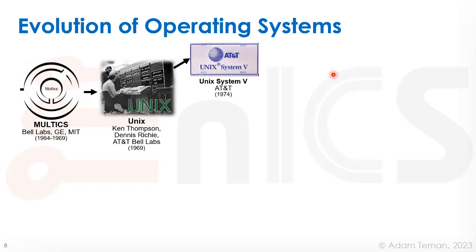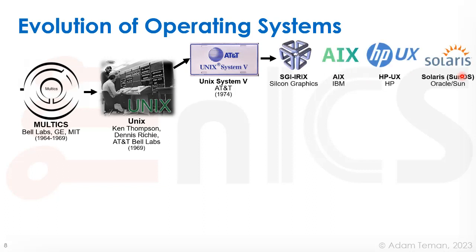UNIX continued its development and eventually became UNIX System 5 by AT&T, which came out in 1974. That led to a bunch of different companies using UNIX to provide their operating systems: Silicon Graphics had SGI IRIX, IBM had the AIX distribution, HP had HP-UX on their servers, and Sun — later purchased by Oracle — had Solaris or SunOS. Those all developed out of System 5 of UNIX.